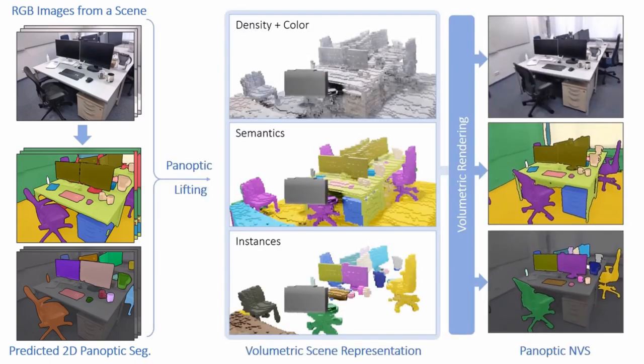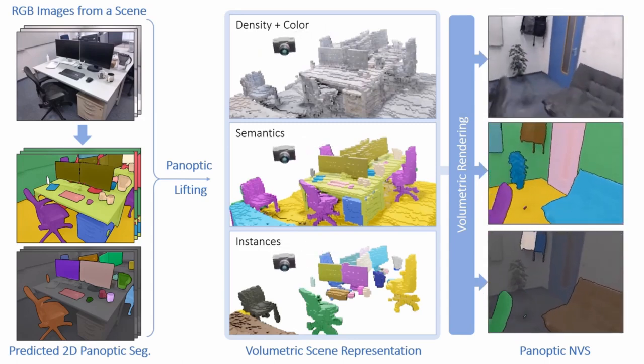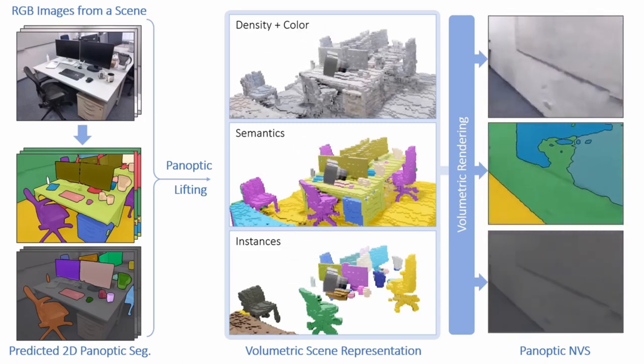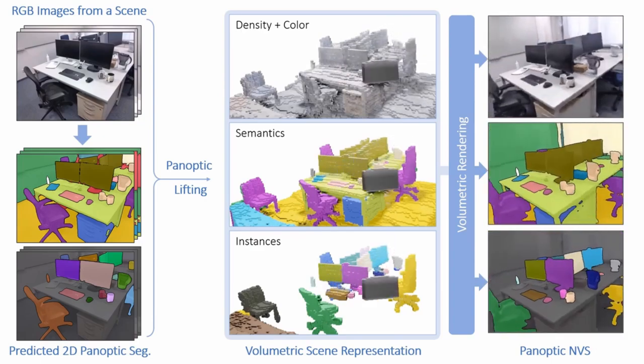We then optimize a volumetric neural scene representation that can be queried for the color, density, semantic, and instance labels for each point in space. Once optimized, our representation can render novel views and their Panoptic segmentations.